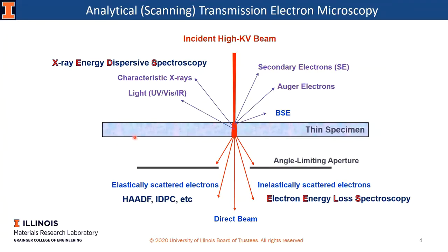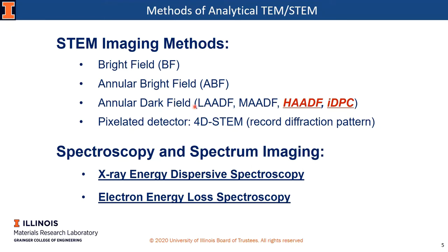Now let's take a look at what kinds of signals we can use for chemical analysis. In TEM, high energy electrons hit a thin sample, generating all kinds of signals. Some transmitted electrons are elastically scattered to high angles — we can use those for imaging and diffraction. Some electrons are inelastically scattered, passing energy to atoms and carrying elemental information — we can use them for energy loss spectroscopy. It also generates characteristic X-rays, which we can use for EDS analysis. Today I will briefly cover imaging techniques capable of identifying elements, then spend time on spectroscopy-based techniques like EDS and EELS.